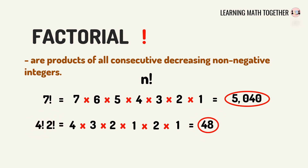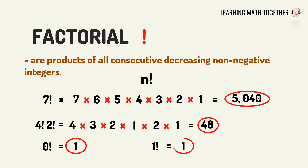We have more notations to bear in mind. If we have 0 factorial, the answer is not 0 — it is always equal to 1. And if you have 1 factorial, it's also equal to 1. Now let's have more examples for you to master how to evaluate numbers with factorial notation.